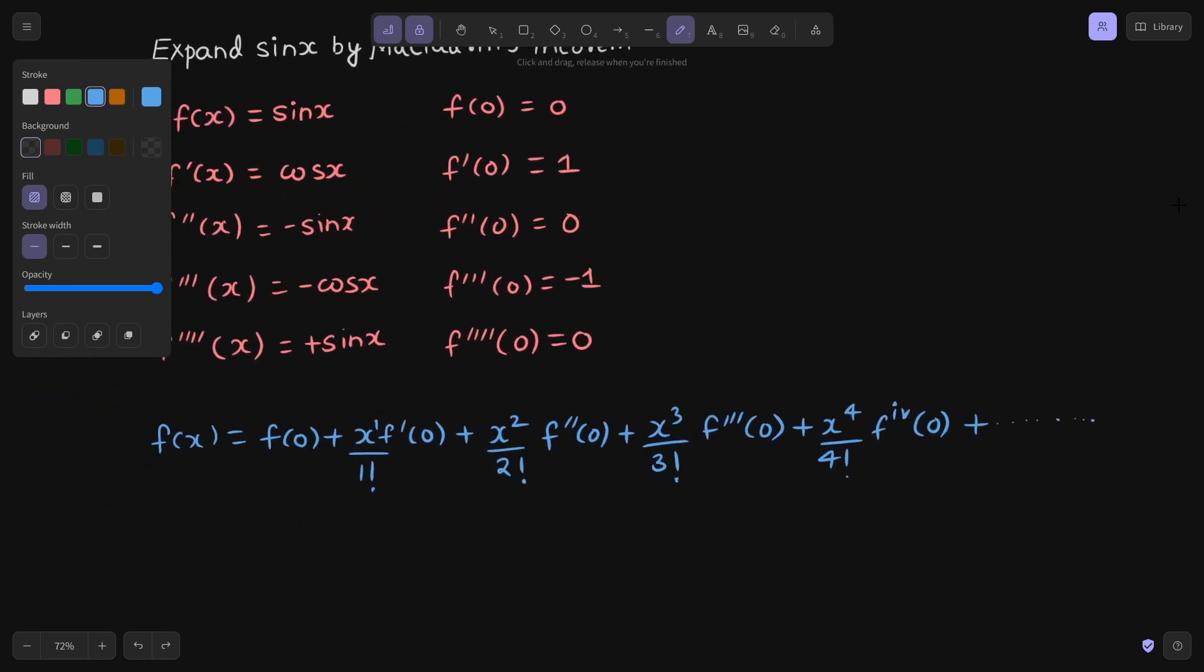Now let's substitute the values that we have gathered previously. So your f(x) will be f(0) is 0. Now f'(0) is 1, so x times 1 divided by 1 factorial is nothing but x. Then x square by 2 factorial, but f''(0) is 0, so this term vanishes. x cube by 3 factorial, triple derivative is minus 1, so you will get minus x cube by 3 factorial, which is 6. Fourth derivative is again 0.